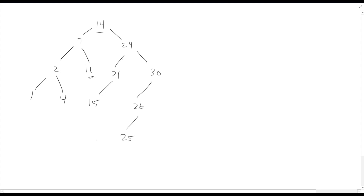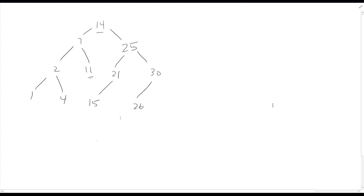Let's do one more — let's try and delete the 24. My suitable replacements: the largest in the left is 21, and the smallest in the right is 25. We've been going on the right, so let's swap it with the 25. So when working with our binary search tree, we want to practice our adds, practice our deletes, and be conscious of the depth of the tree — thinking to ourselves whether it's closer to that linear maximum depth or to that nice squat logarithmic minimum depth.